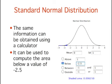The same information can be obtained using the included normal calculator. This figure shows how the calculator can be used to compute the area below a value of negative 2.5 on the standard normal distribution. Note the mean is set to 0 and the standard deviation is set to 1.